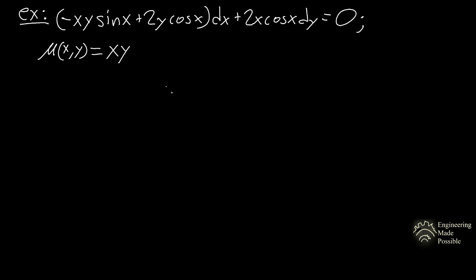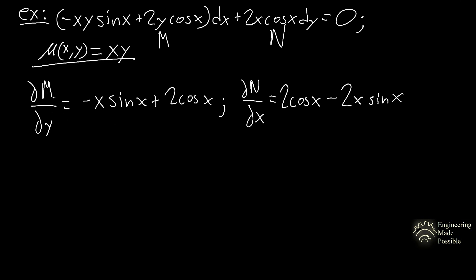Let's go over an example. The problem statement says: verify that the given differential equation is not exact, multiply by the indicated integrating factor mu, verify that the new equation is exact, and then solve. So let's check this differential equation first for exactness. We compute the partial derivative of M with respect to y and the partial derivative of N with respect to x. As you can tell, these are not equal to each other, so therefore this differential equation is not exact.